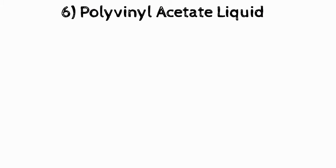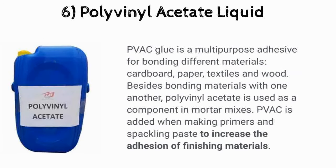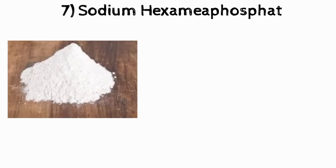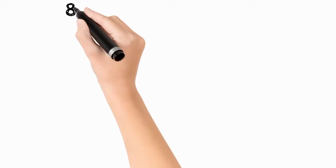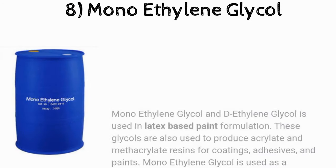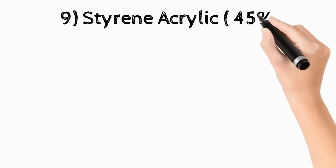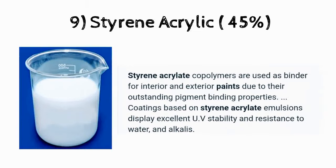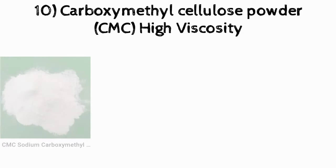The sixth raw material you need is polyvinyl acetate liquid PVA 50. The seventh is sodium hexametaphosphate powder. The eighth is monoethylene glycol liquid. The ninth is styrene acrylic 45 percent liquid. The tenth is carboxymethyl cellulose powder, CMC powder.